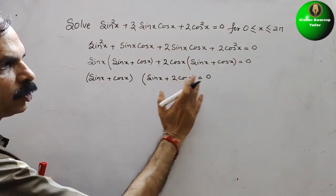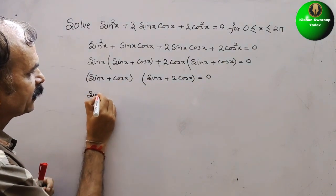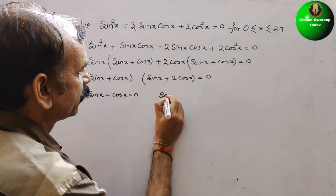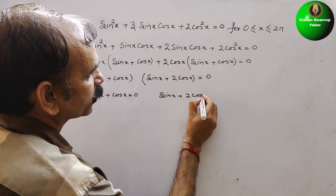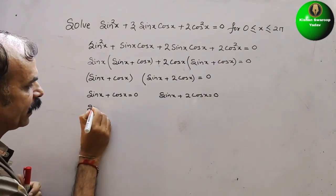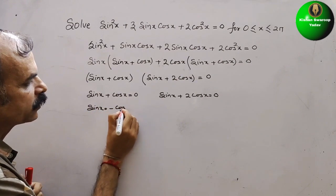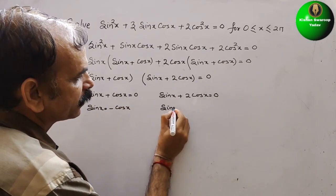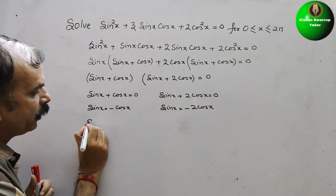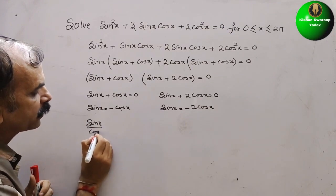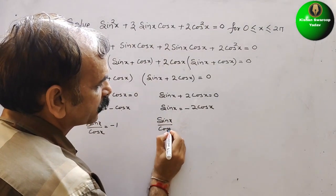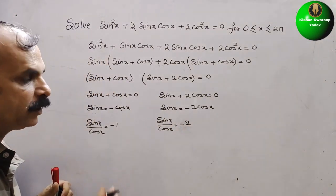Since the product of the two factors equals zero, each factor equals zero. So sinx + cosx = 0 gives sinx = −cosx, meaning sinx/cosx = −1. And sinx + 2cosx = 0 gives sinx = −2cosx, meaning sinx/cosx = −2.